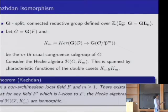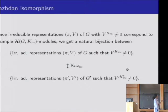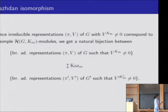Kazhdan's theorem: fixing a non-Archimedean field F and M, there exists L ≥ M such that if F prime is L-close to F, then the Hecke algebras at level M become isomorphic. To have an isomorphism at level M, you need the fields to be a few levels closer. This gives a natural bijection between irreducible representations of G with non-zero K_M fixed vectors and irreducible representations of G prime with non-zero K_M prime fixed vectors, via the Hecke algebra isomorphism.